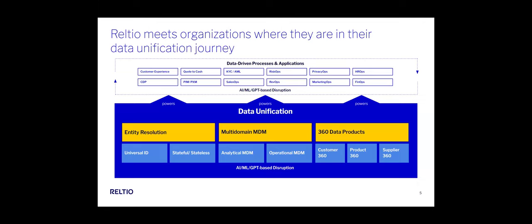On the left side, we see a focus on entity resolution — understanding that Mike Frasca from your marketing stack is the same Mike Frasca in your shipping system and customer service system. Once you have a universal ID, you know that customer across your entire organization. Shifting right, we have multi-domain MDM — not just understanding a person, but their relationships: household, spouse, products purchased, supplier relationships. This gives you a much larger view to share into customer experience, risk and fraud detection, and privacy and compliance.